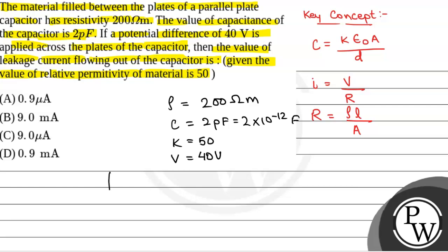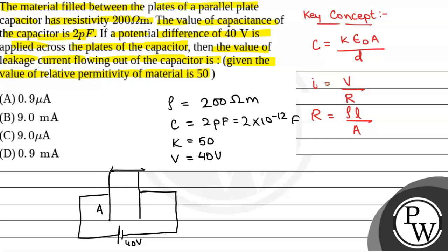The setup can be shown as: this is a parallel plate capacitor and the potential difference applied across it is 40 volt. Here D is the length of the capacitor plates and A is the area of the capacitor plates. K is equal to 50, that is the relative permittivity of the material which is filled between the capacitor plates.